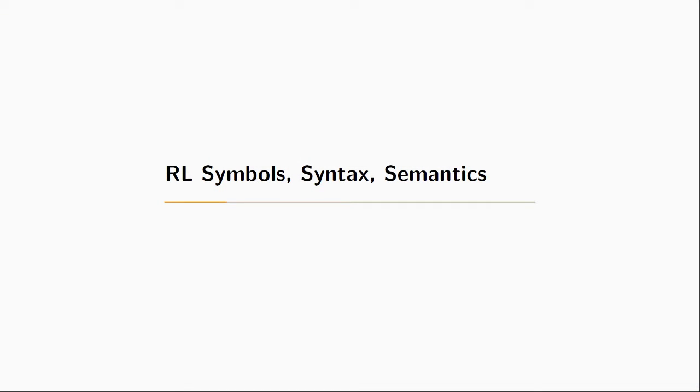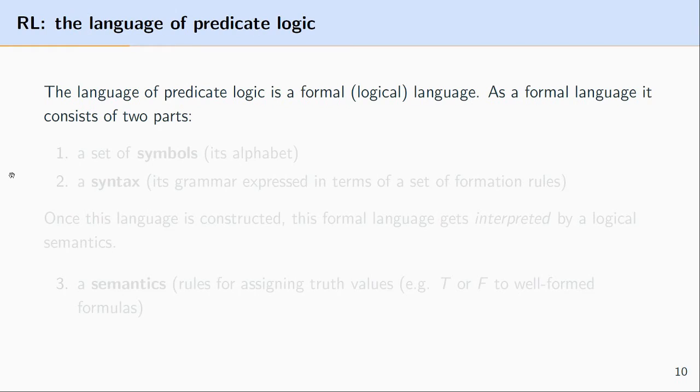In this video, I want to talk about the language of predicate logic and introduce the symbols of this particular language. The language of predicate logic is a formal logical language, and as a formal language, it consists of two principal parts.